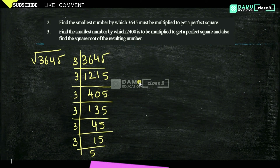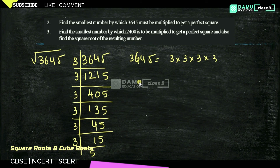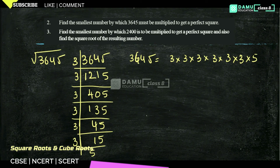So 3,645 can be written in the format of 3 × 3 × 3 × 3 × 3 × 3 × 5. Finally, 5 is there. You can make these into groups: group 1, group 2, group 3 — then 5 is left.